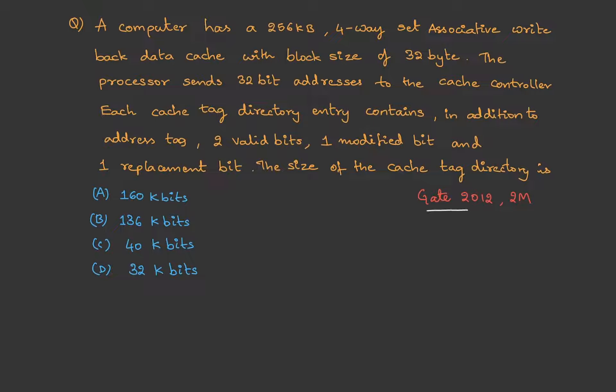Here is a question from GATE 2012 for two marks. A computer has 256 KB four-way set-associative write-back data cache. Here write-back means whenever the data is updated, that is copied back into the main memory as well. Anyways, we don't need that for this question. Let me continue with the question. With a block size of 32 byte,